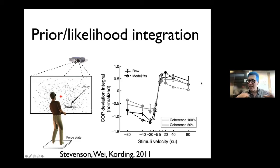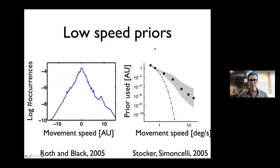We saw that with that simple prior-likelihood integration we can predict the effect of vection — the effect towards moving stimuli — exclusively based on the uncertainty that people have in detecting the stimulus. I encourage anyone to please ask questions; that's what makes it useful.